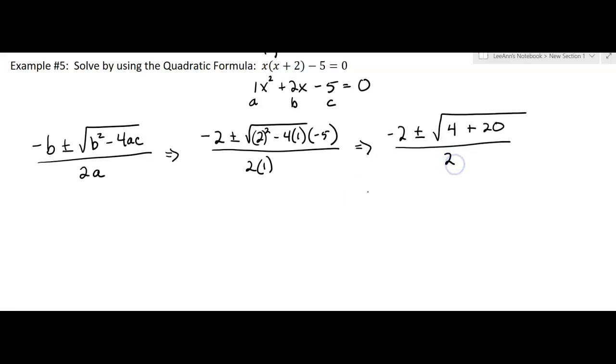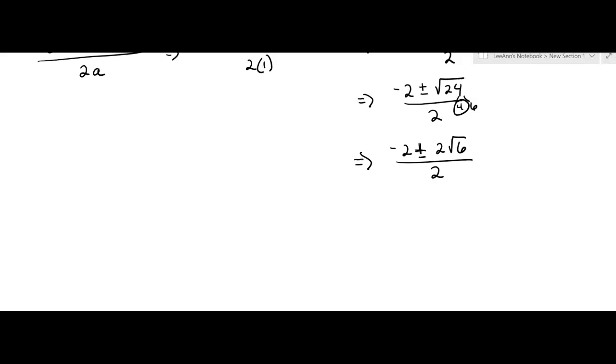Okay, so we keep going. Negative 2 plus or minus the square root of 24 over 2, and then negative 2 plus or minus, now 24 breaks into 4 times 6, so I can take the square root of 4, all over 2.